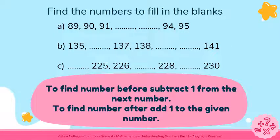Ok children, now what you have to do is find the numbers to fill in the blanks. To find the number before, you have to subtract 1 from the next number. And to find the number after, add 1 to the given number. Now try to do A, B and C on your own.